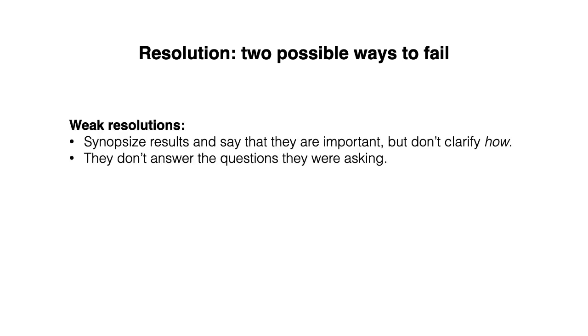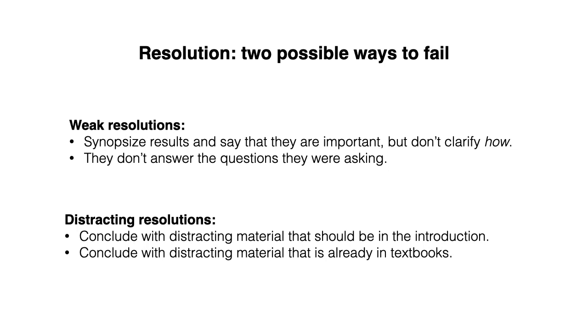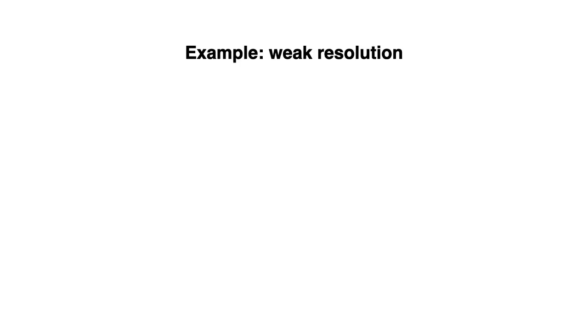When it comes to the resolution, there are two possible ways to fail. The first leads to a weak resolution. Weak resolutions synopsize results and say that they are important, but don't clarify how, and they don't answer the questions they were asking. The second leads to distracting resolutions. Distracting resolutions conclude with distracting material that should be in the introduction, or material that is already in textbooks.